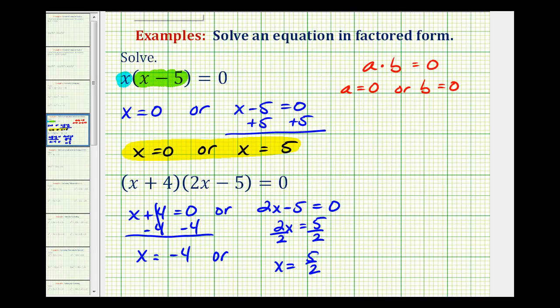And these would be the two solutions to our given equation. X equals negative four or x equals five halves. When x is negative four, notice how the first factor is zero. And when x is five halves, the second factor would be equal to zero, giving us a product of zero.